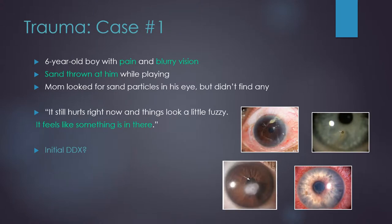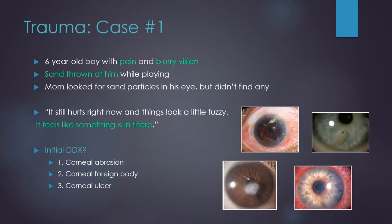Let's try a case. A six-year-old boy with pain and blurry vision is brought in by his mom. Earlier that day, while playing with his brother, he had sand thrown at him. Mom looked for sand particles in his eye but didn't find any. He tells you it still hurts and things look a little fuzzy — it feels like something is in there. Your initial differential should include corneal abrasion, corneal foreign body, corneal ulcer, or even acute anterior uveitis.